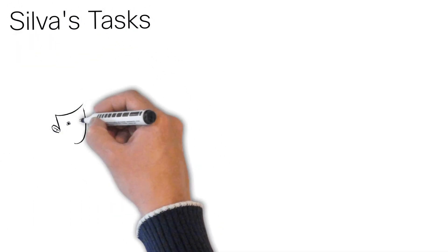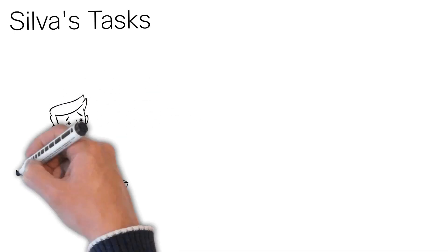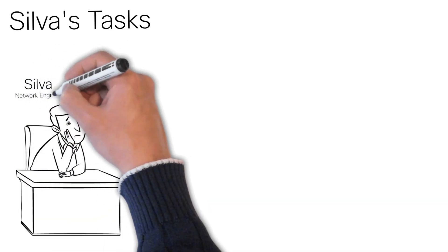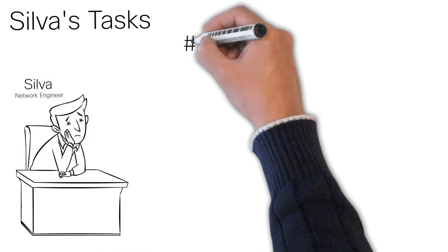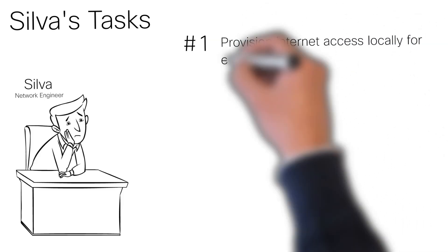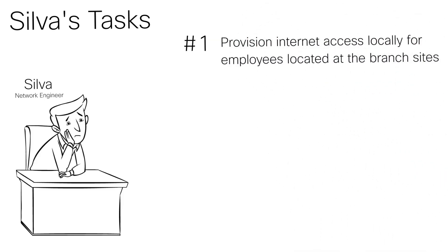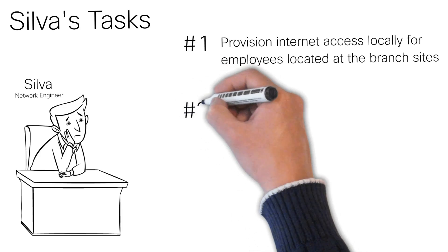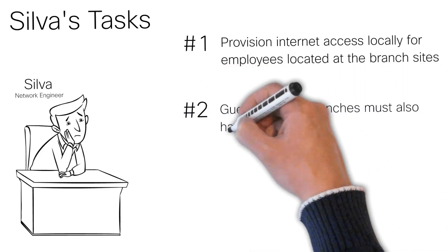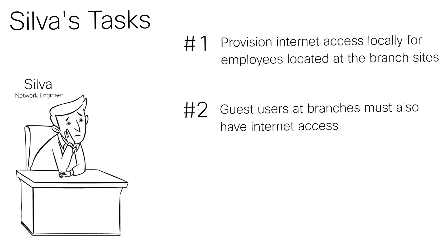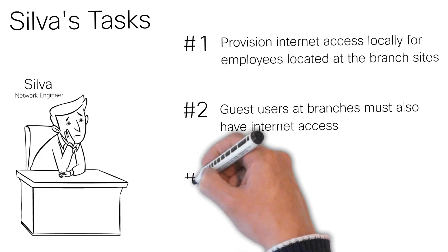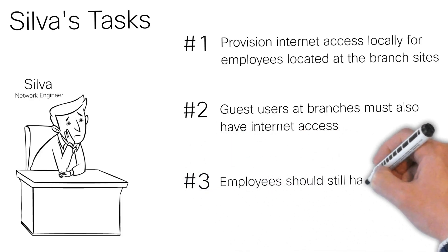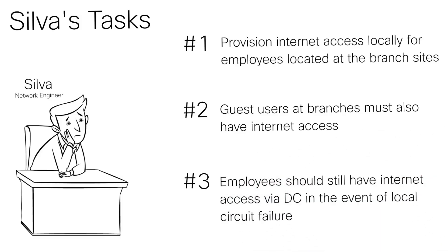Let's take Silver's case, for example. He's a network administrator in an enterprise, and his leadership has provided him with a few tasks. First, provisioning internet access locally for employees located at branch sites. Second, provisioning the same internet access even for guest users located at the branch. And third, in the event of a local circuit breakout failure at the branch sites, provisioning internet access in the data center.